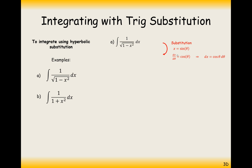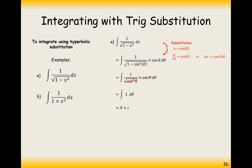Let's now substitute in x and dx. We get 1 over the square root of 1 minus sine squared theta times cos theta dθ. Now, 1 minus sine squared equals cos squared, and the square root of cos squared is cos. So when you've got 1 over cos times cos, these two expressions cancel each other out. So we've got the integral of 1 dθ, which is just theta plus c. Now we need to get back in terms of x. Since x equals sine theta, we inverse it: arcsin x equals theta. So the answer is arcsin x plus c.